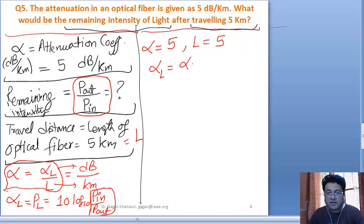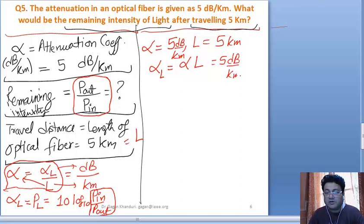Alpha L is alpha into L. So it would be 5 dB per kilometer into 5 kilometers. So alpha L is given as 25 dB.